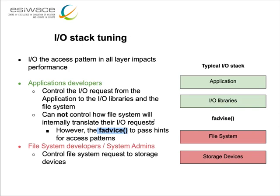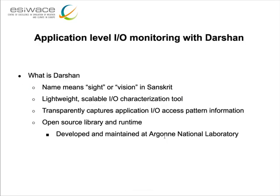Apart from the application developers, more tuning to the storage system can be done by the file system developers and the system administrators, but this is something that as application developers you will not be able to control. So now let's go into more details on Darsan. The name means 'sight' or 'vision' in Sanskrit. It is a lightweight, scalable IO characterization tool that transparently captures application IO access pattern information.